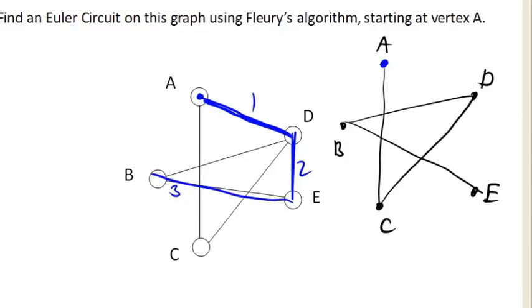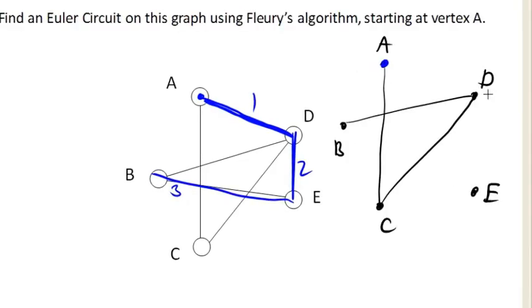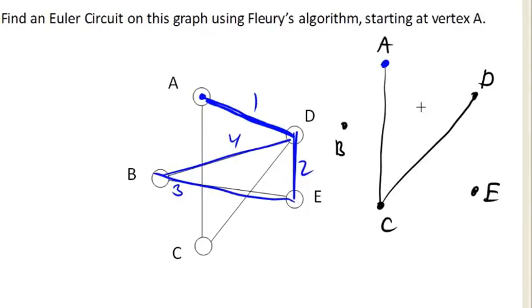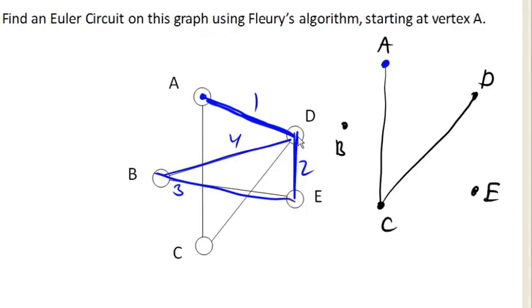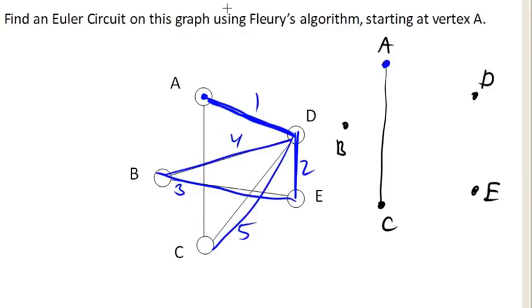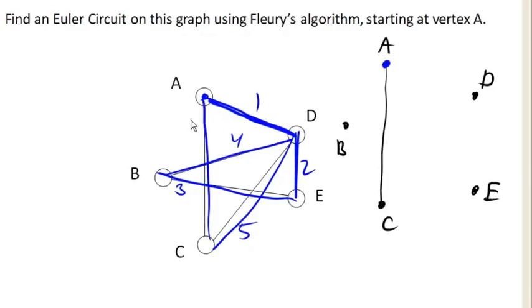And then from B, there's only one route we can follow, and that's to D. And then from D, there's only one route we can follow to C. And from C, there's only one route we can follow back to A, and there is our Euler circuit.